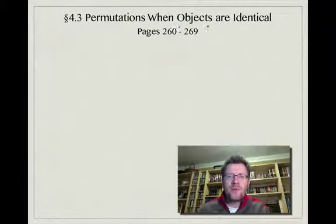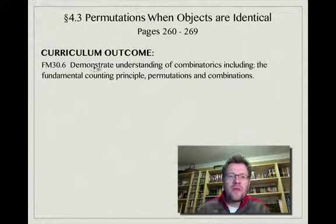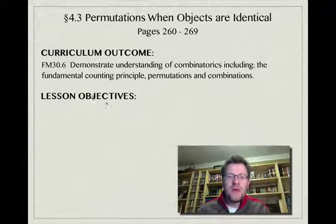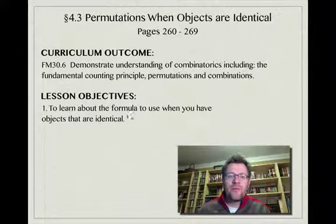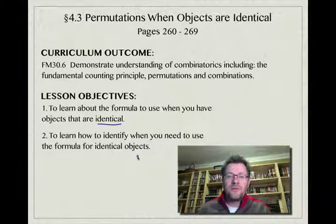Our topic today is permutations when objects are identical, on pages 260 to 269 in your textbook. Our curriculum outcome is to demonstrate understanding of combinatorics including the fundamental counting principle, permutations, and combinations. Our lesson objectives today: number one, to learn about the formula to use when you have objects that are identical; number two, to learn how to identify when you need to use the formula for identical objects.